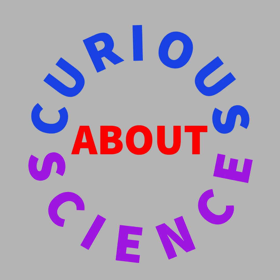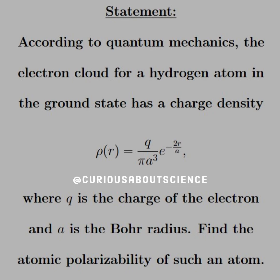The statement reads, according to quantum mechanics, the electron cloud for a hydrogen atom in the ground state has a charge density rho equal to q over pi a cubed e to the negative 2r over a, where q is the charge of an electron and a is the Bohr radius. Find the atomic polarizability of such an atom.